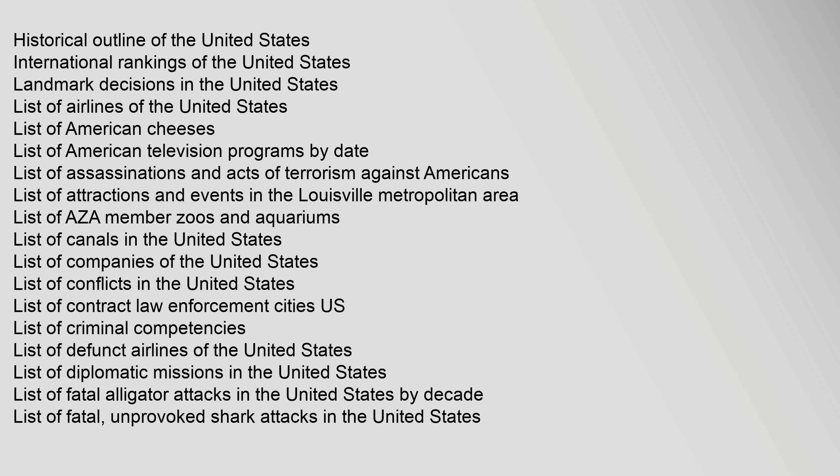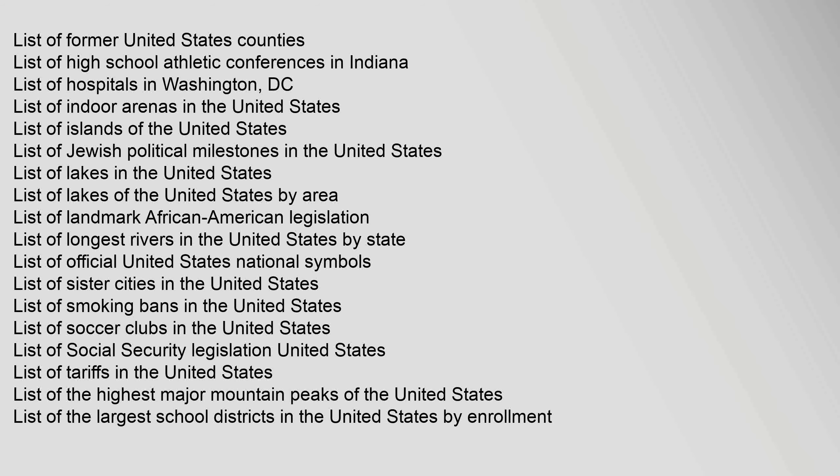List of Criminal Competencies, List of Defunct Airlines of the United States, List of Diplomatic Missions in the United States, List of Fatal Alligator Attacks in the United States, List of Unprovoked Shark Attacks in the United States, List of Former United States Counties, List of High School Athletic Conferences in Indiana, List of Hospitals in Washington D.C., List of Indoor Arenas in the United States, List of Islands of the United States, List of Jewish Political Milestones in the United States, List of Lakes in the United States, List of Lakes of the United States by Area.